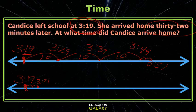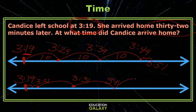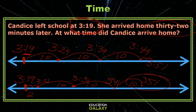Now I've used those 2 minutes, I have 30 left. Let's do our 10s. Hop 10 — that's 3:31. Hop 10 — that's 3:41. Hop 10 — it's 3:51. So now I've used my 2, and then I've hopped 10, 20, 30, again landing at 3:51.